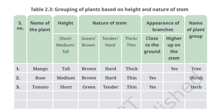Mango is a tall plant with a hard, thick, brown stem. Its branches grow high on the stem. It is a tree. Rose is a medium height plant with a hard, thin, brown stem. Its branches grow close to the ground. It is a shrub.